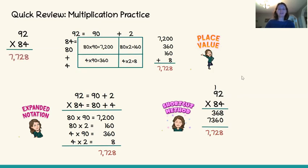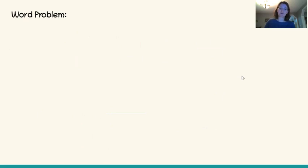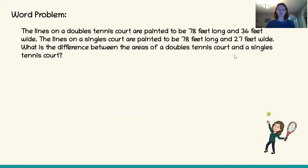The next thing we are going to look at is word problems. On the second class activity page you have four word problems and we are going to do the first one together — Question 16. The question is: the lines on a doubles tennis court are painted to be 78 feet long and 36 feet wide. The lines on a singles court are painted to be 78 feet long and 27 feet wide. Remember with a word problem — read it carefully, figure out what information you know, and what you are being asked to find out.